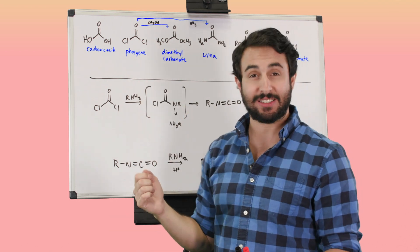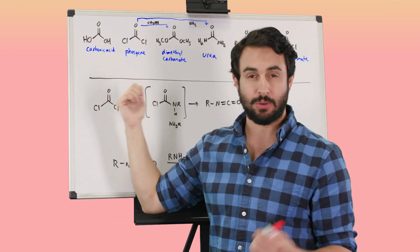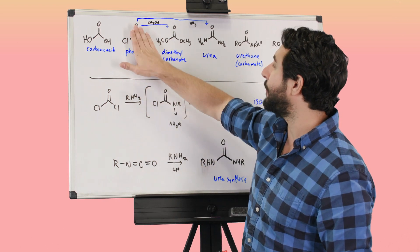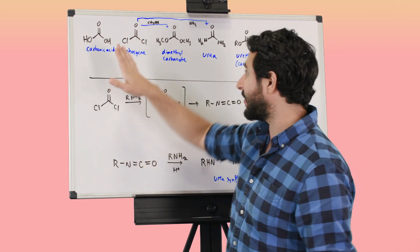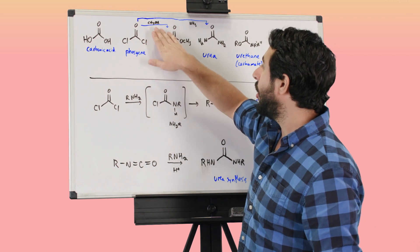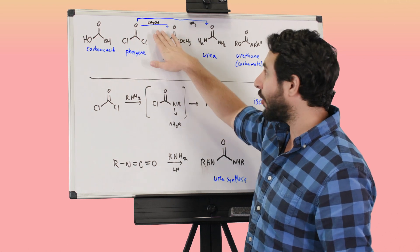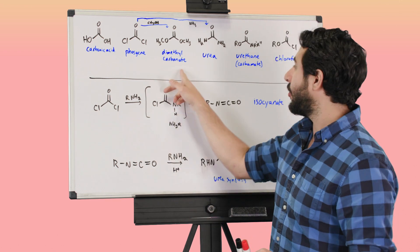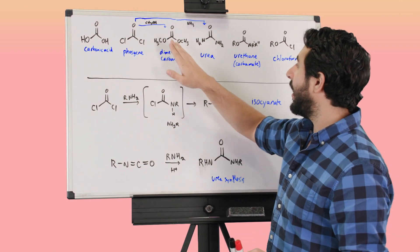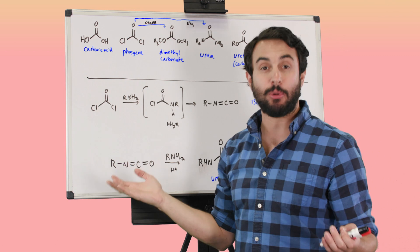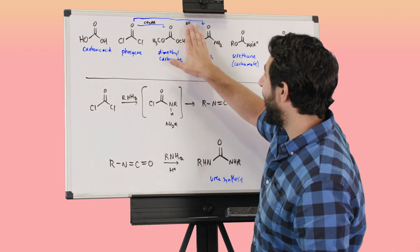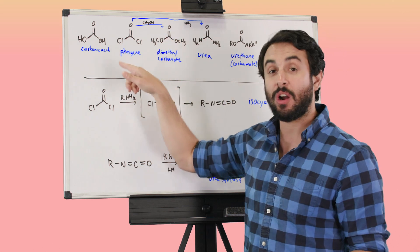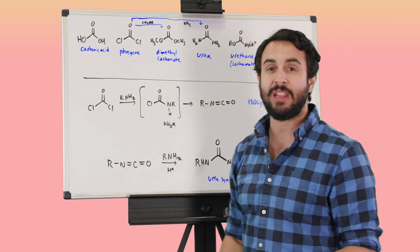Phosgene is a highly toxic gas — it was actually used in World War Two as a chemical weapon for a while. From phosgene we can do a lot of things. We can react phosgene with an alcohol like methanol, and that can give us a carbonate — so this is dimethyl carbonate. This is essentially like a double ester: we could think of it as an ester on either side, so we've got OR and OR on either side of a carbonyl.